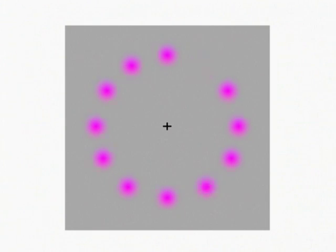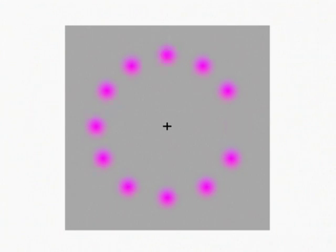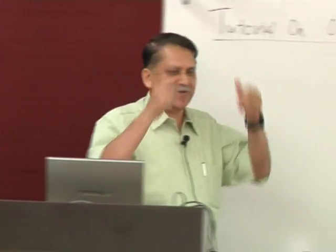Now, there is only one dot moving on the circle. From here it is even better. The nearer you are to this, the easier it is to focus. The further you are, the mind plays games.